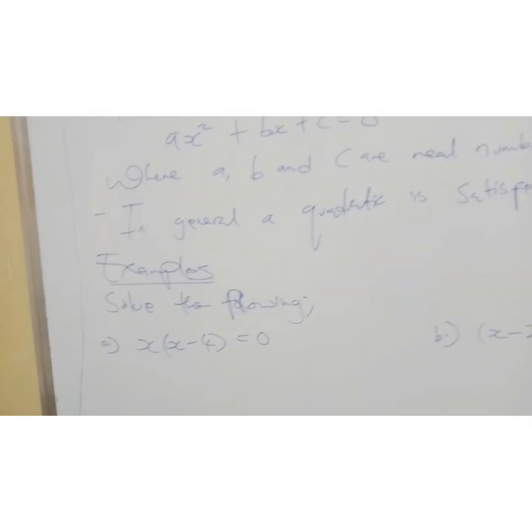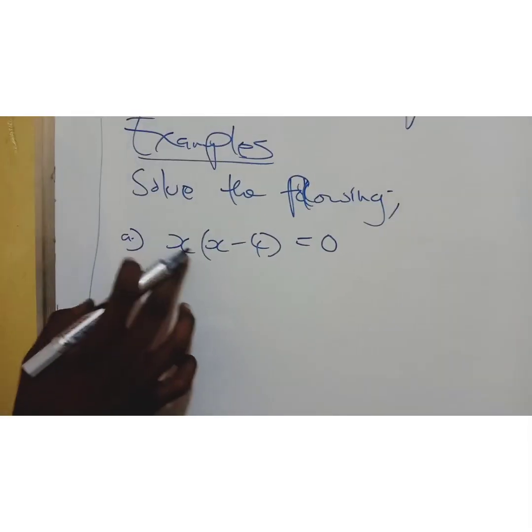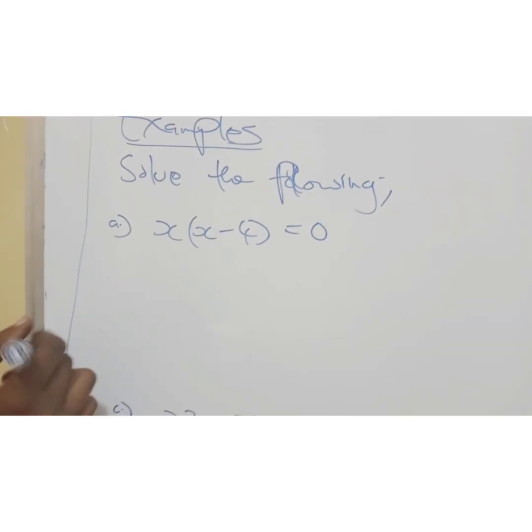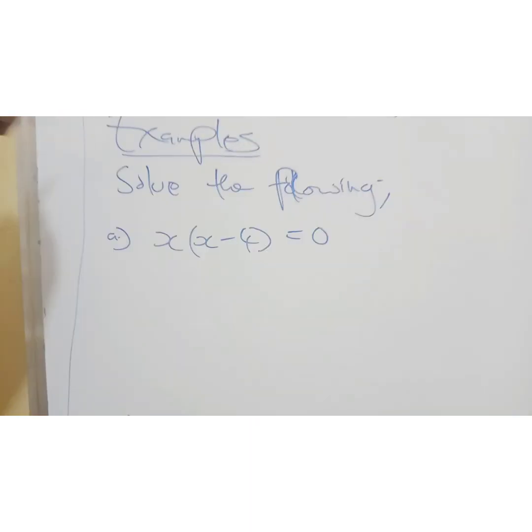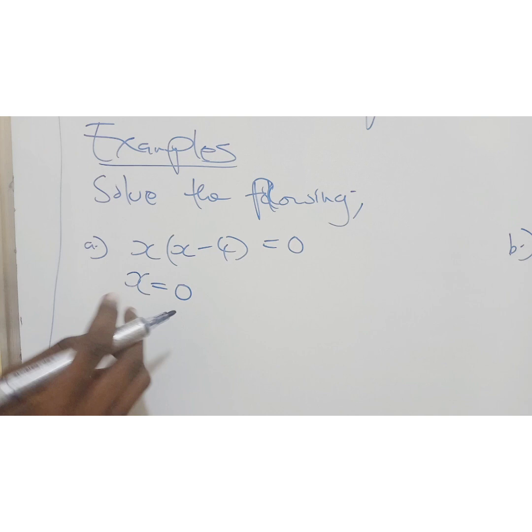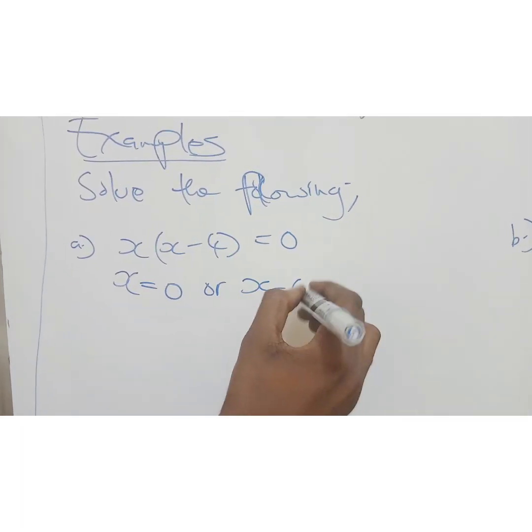So I have a couple of examples here. Solve the following. We have x, then x minus 4 equals 0. How do you solve this? Most people will start by breaking. You don't do that. Once they have equated an equation to 0, this is what you do.